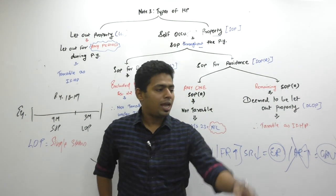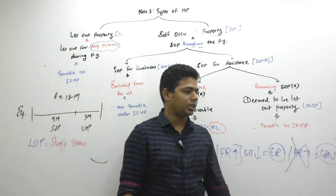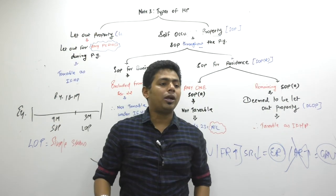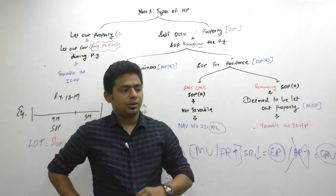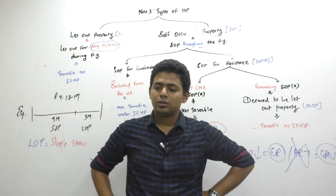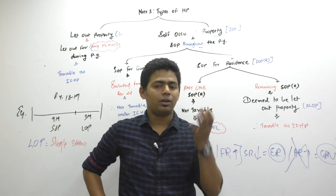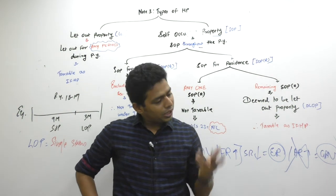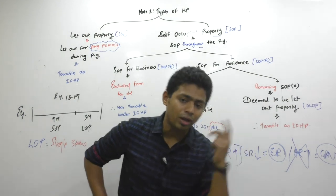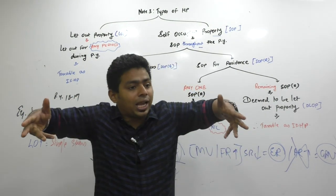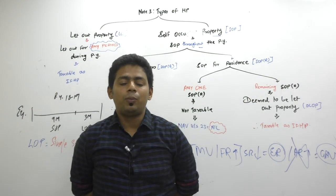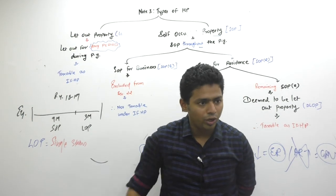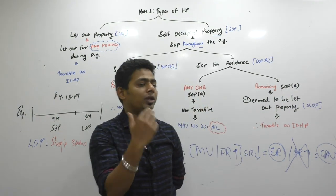In an exam, they will not tell you directly whether a property is DLOP or SOP — you need to use your brain. If we have a property without actual rent mentioned in the question, what is its nature? It could be SOP or DLOP. If you have more than one such property, declare one as SOP and the other as DLOP. You need to take that decision with the alertness to declare the best possible solution where the assessee will be liable to pay minimum tax.